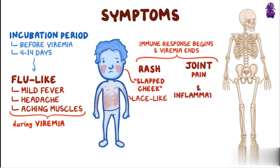Joint pain and inflammation, or arthralgia and arthritis, linked to Parvovirus B19 infection usually affects the small joints of the hands, wrists, feet, and knees, and are often symmetrical, meaning that the same joints on both sides of the body will be affected.